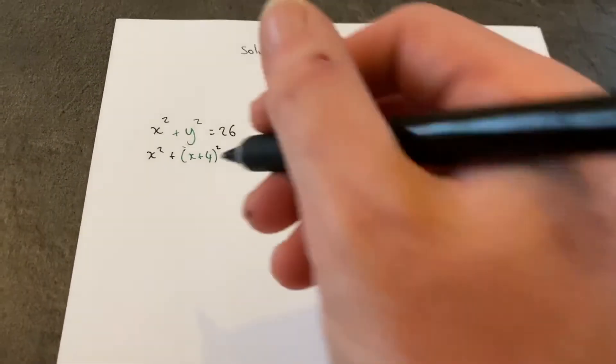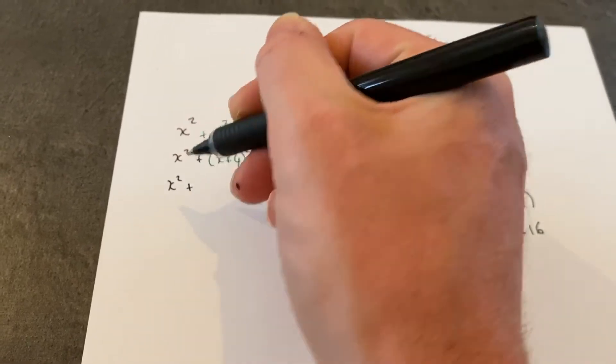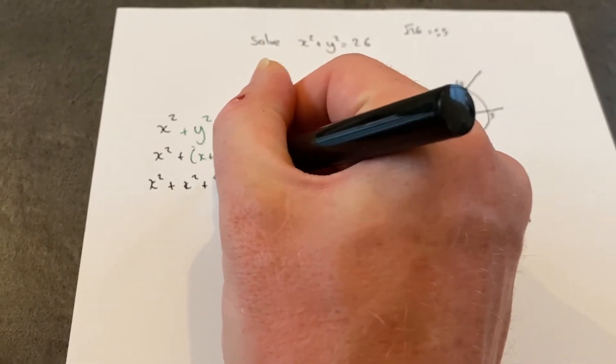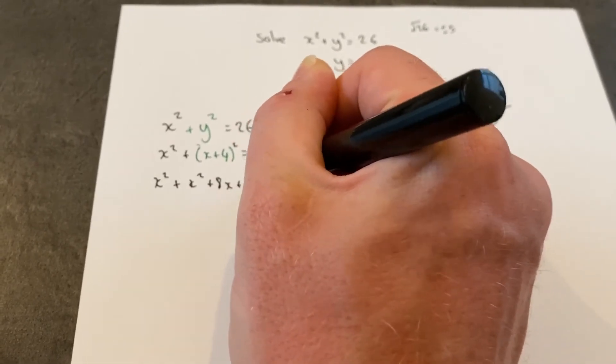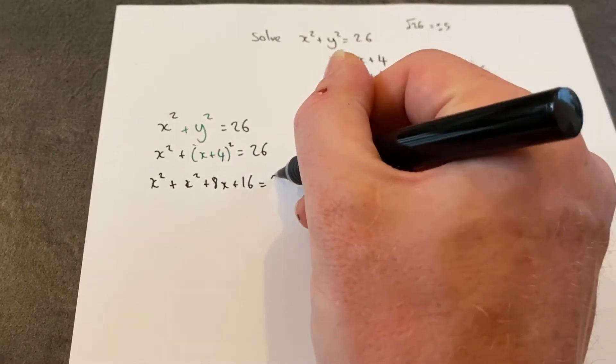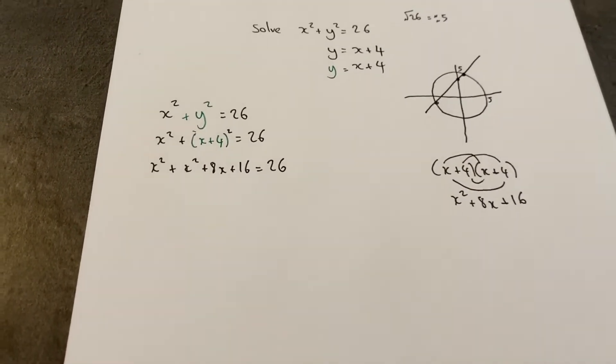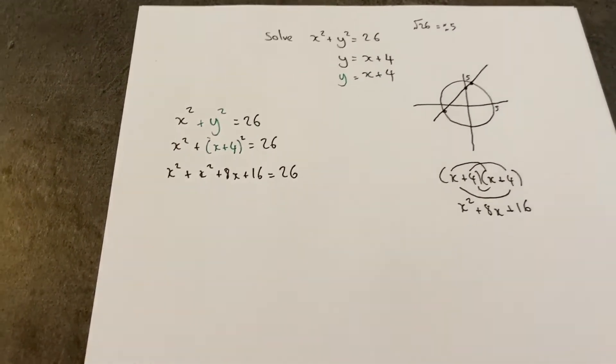Back to the equation: there's an x squared to begin with, this whole expansion becomes x squared plus 8x plus 16, and we're told that this equals 26. We're now going to solve this quadratic equation.